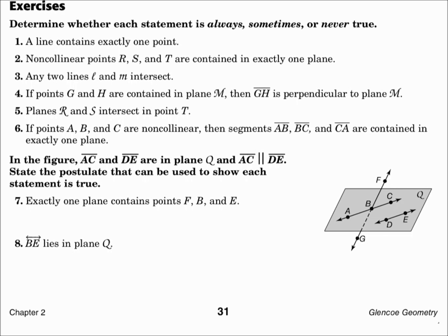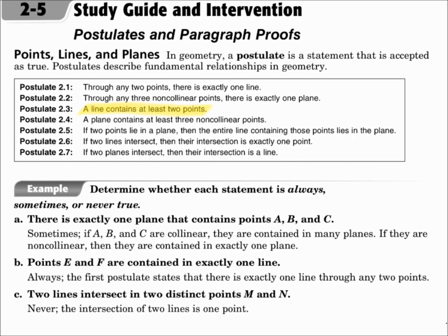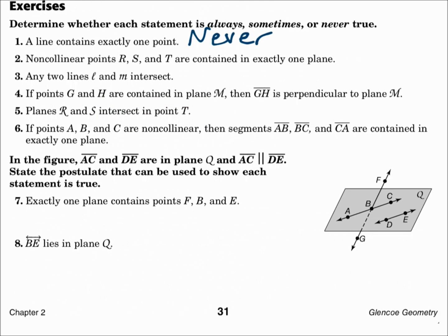Determine whether each statement is always, sometimes, or never true. Number one: a line contains exactly one point. That postulate says a line contains at least two points, so this is never true.